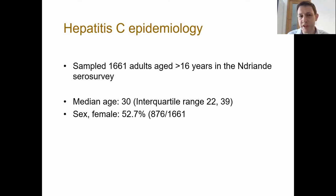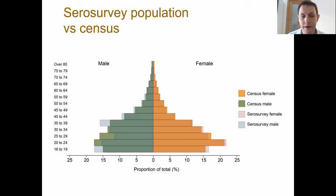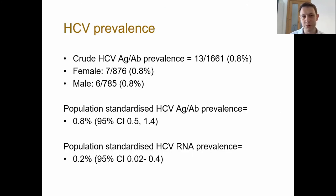Sur 100 000 personnes recensées, nous avions échantillonné 1 661 adultes âgés de plus de 16 ans, dont 52% de femmes, et l'âge moyen de l'échantillon était de 30 ans. Ce graphique montre la relation entre la population du recensement en gris et orange et la population de la sérosurveillance. Les couleurs bleues et roses montrent la correspondance étroite entre la répartition de la population du recensement et celle de la sérosurveillance. La prévalence était de 13 cas, soit 0,8%, ce qui correspond à 7 hommes et 6 femmes. La prévalence standardisée de la population était également de 0,8%.